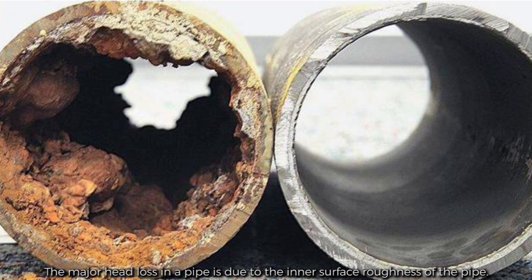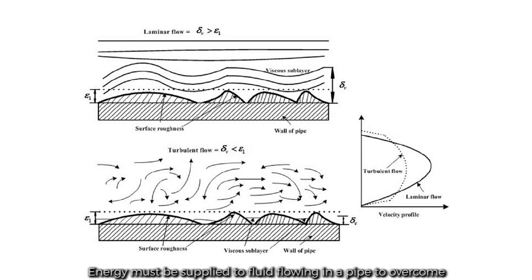The major head loss in a pipe is due to the inner surface roughness of the pipe. Energy must be supplied to fluid flowing in a pipe to overcome the resistance caused by this roughness.